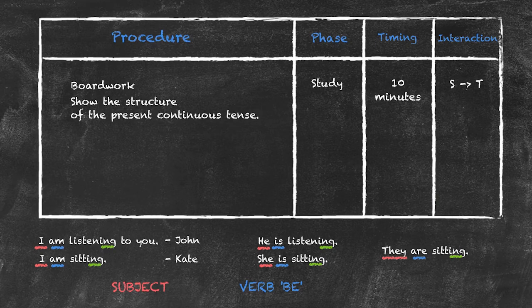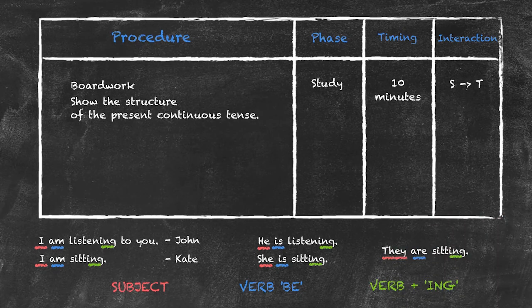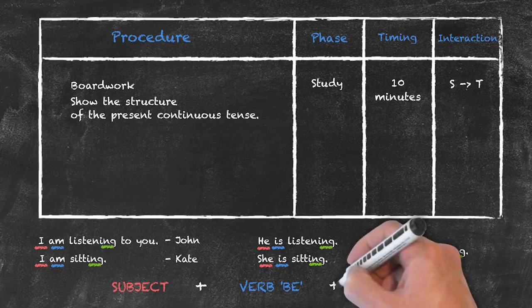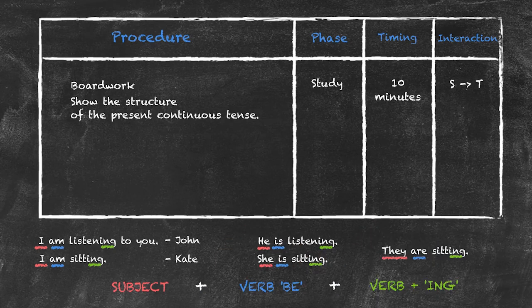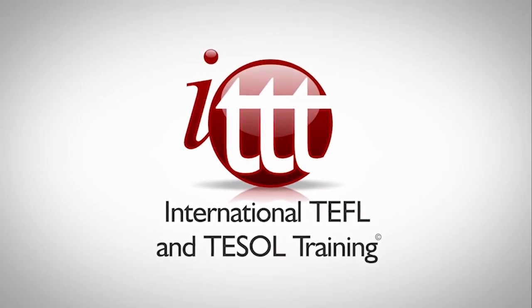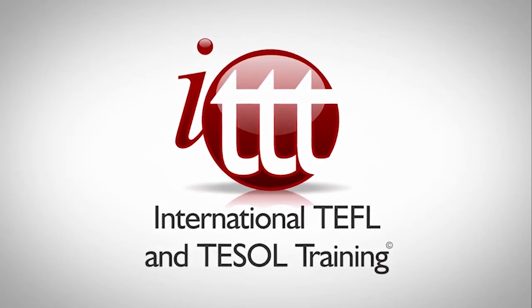And so the third word is the verb plus ing. So in this way, I'm showing the structure of the present continuous tense in the form of this model. Subject plus verb be plus the verb ing.